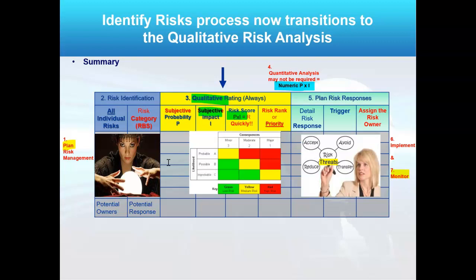The advantage to a category is when you group risks together, you can use common responses for multiple or different events. You're also identifying potential owners and potential responses — your risk register should list most of those things as well. We do a qualitative analysis always, so every one of these individual risks goes through qualitative analysis. It's fast — yes, it's subjective, but you're an expert.